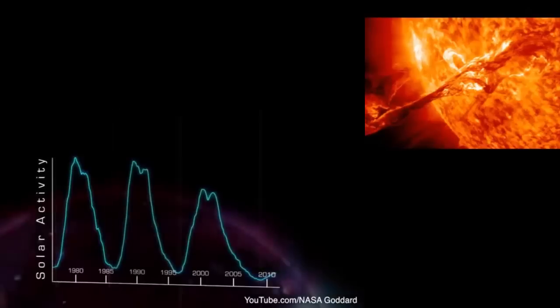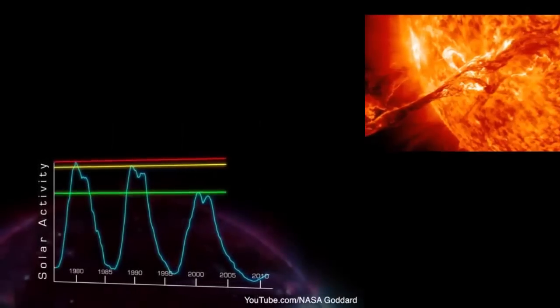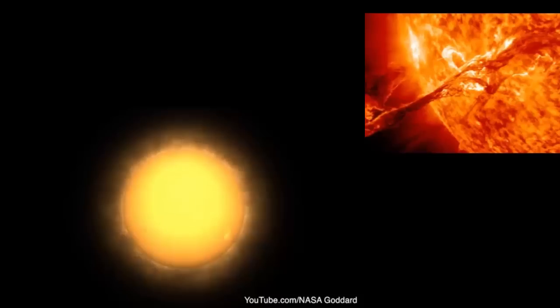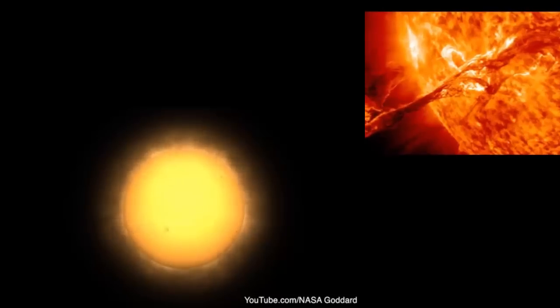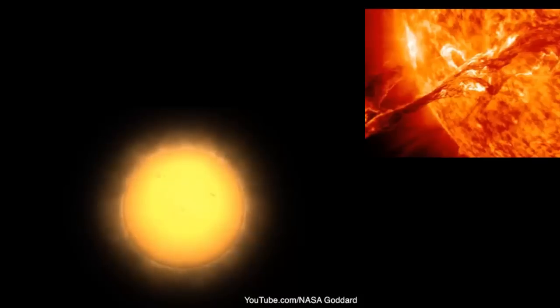During one cycle, the number of sunspots, a good indicator of solar activity, goes from low to high and back down to low.